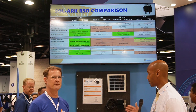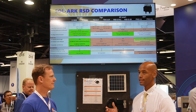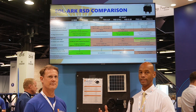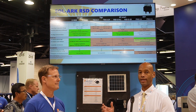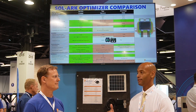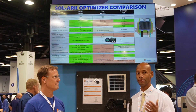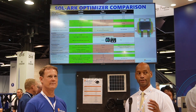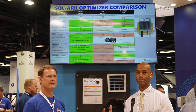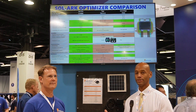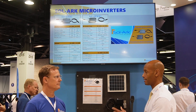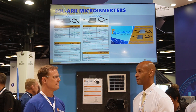Excellent. So with the Solark DC optimizer solution, it's only going to provide power optimization and power transformation if there's a shading issue that warrants it. Otherwise, you're not wasting that energy, because every conversion — stepping up voltage, stepping down voltage, converting DC to AC or AC to DC — there's a little bit of loss. It's never 100% efficient. So doing it only on demand as needed makes a lot of sense.